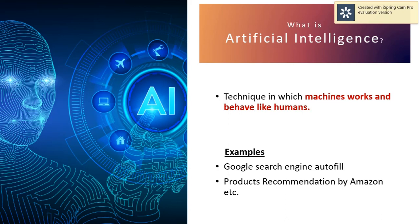Whatever behavior humans are performing, if a machine can mimic and perform the same activities, then we can say that it is an AI machine. For example, face detection, text editors and autocorrect, and recommendation systems — these are a few examples of AI.